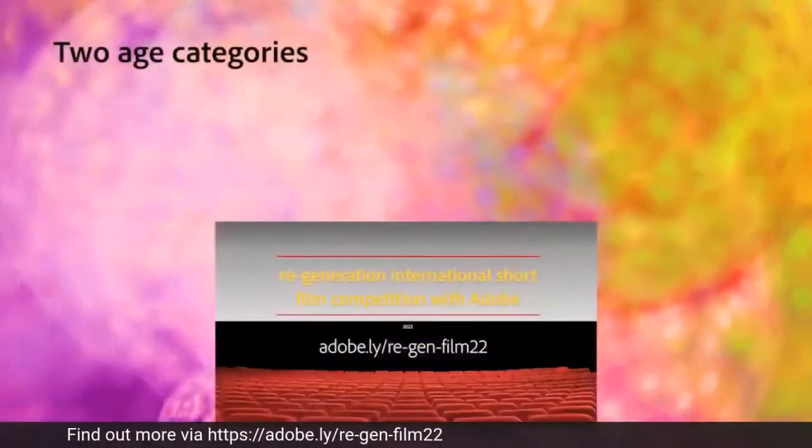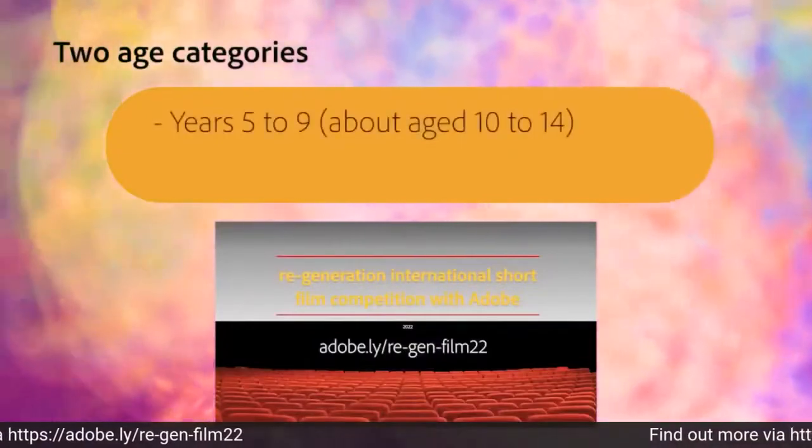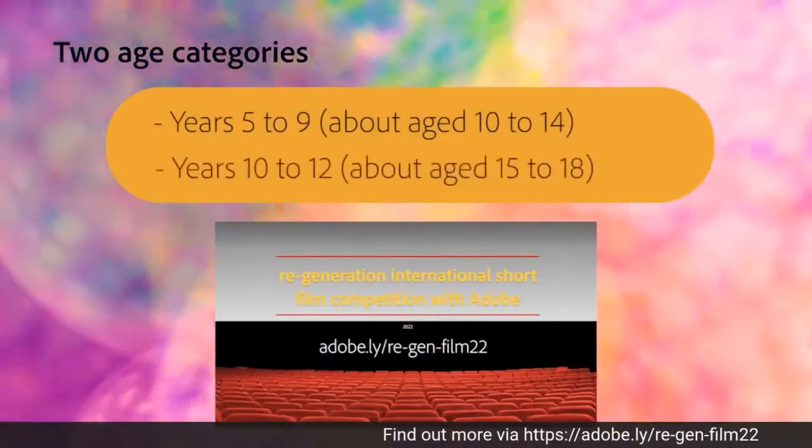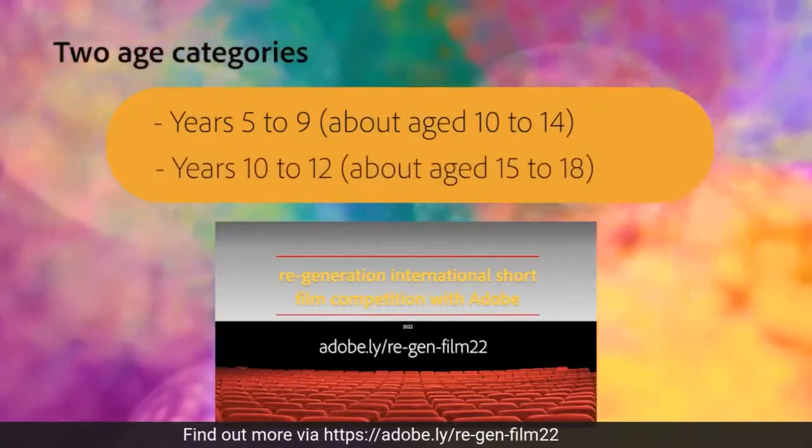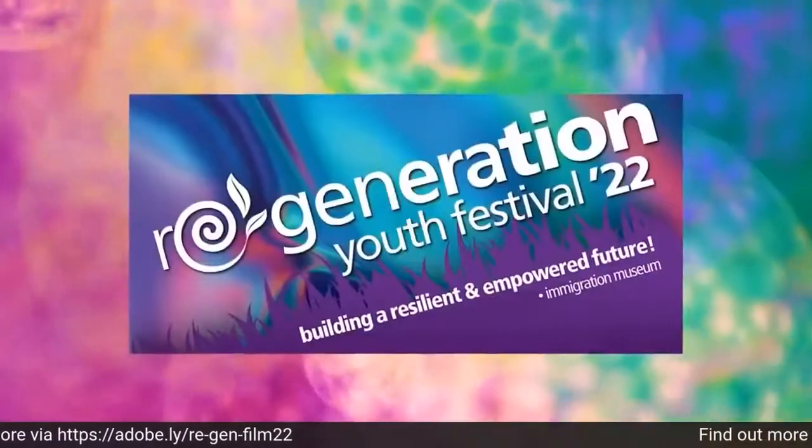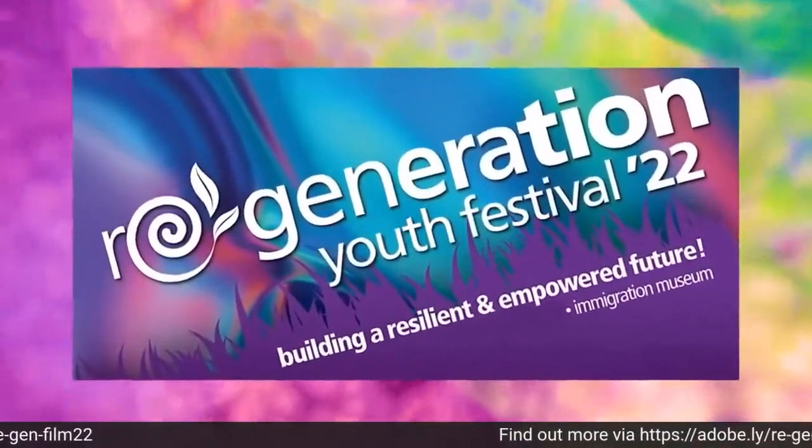The film can be a mix of real life and animation. There are two main age categories for this film competition: Years 5 to 9 students, about aged 10 to 14, and Years 10 to 12 students, about aged 15 to 18. Winning entries from each section will be showcased at the Regeneration Festival at the Immigration Museum in Melbourne. There are 40 schools registered so far and over 1,700 students potentially involved in the Regeneration Film Festival. This competition is open to any student from Years 5 to 12 throughout Australia, New Zealand and into Southeast Asia. Register your school and get involved.